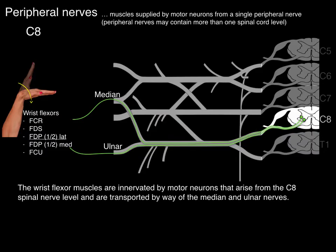Peripheral nerve territories are muscles supplied by motor neurons from a single peripheral nerve. These peripheral nerves may contain more than one spinal cord level.